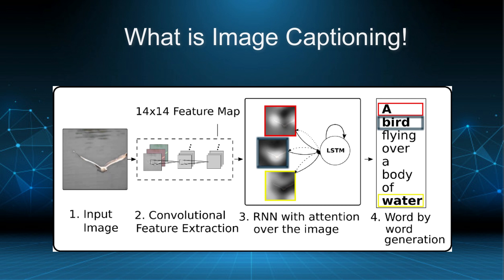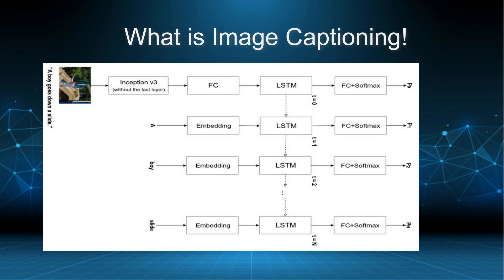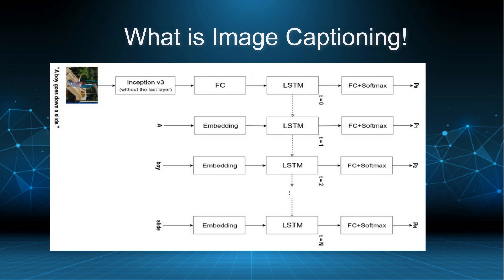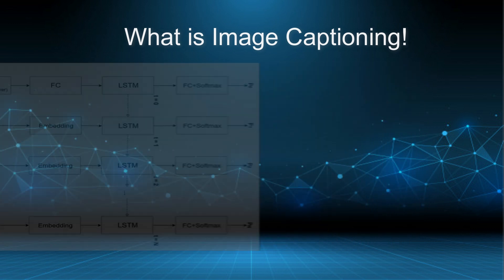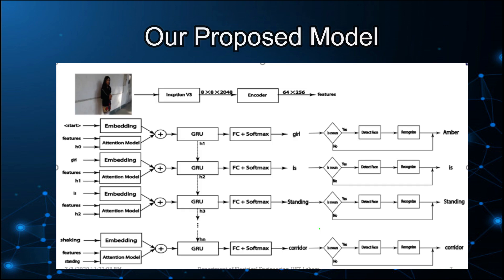In the basic image captioning model, the model takes an input image through a CNN to extract feature vectors and then applies RNN visual attention for word-to-word generation. In our model, we used Inception V3 to extract information and produce a feature vector, which is then passed to a fully connected layer of size 256 units.